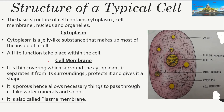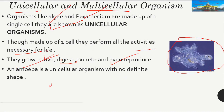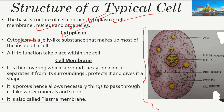Now let's move forward to the structure of a typical cell. Cells are similar in their basic structure, which contains the cytoplasm, cell membrane, nucleus, and organelles. The cell is filled with a jelly-like substance that makes up most of the inside of the cell — this substance is known as cytoplasm. All life functions take place within the cytoplasm.